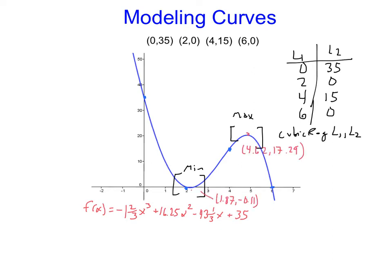So going through, our calculator is spitting out this information, that this minimum here is at 1.87, negative 0.11. We did see it dips down a little bit further. And this one's at 4.62, 17.29.